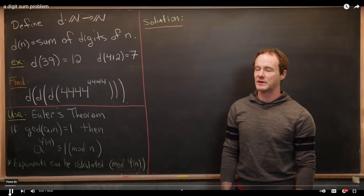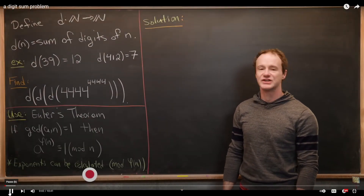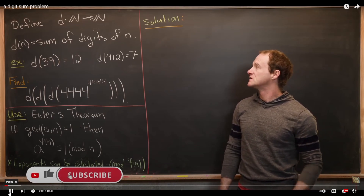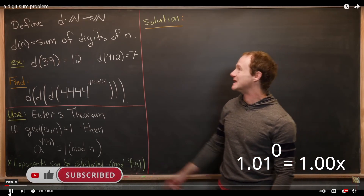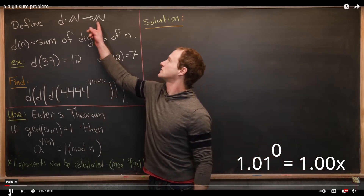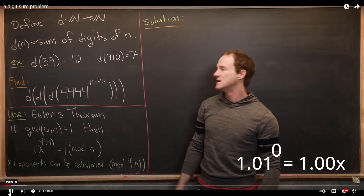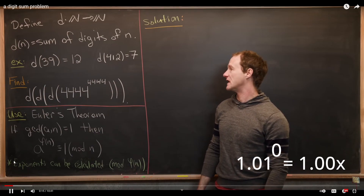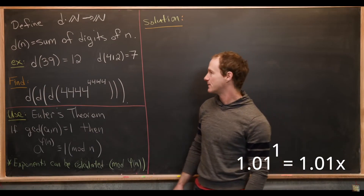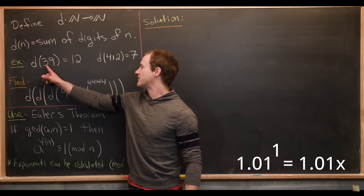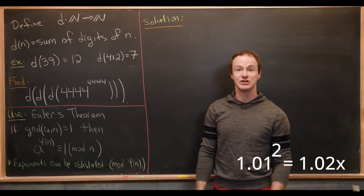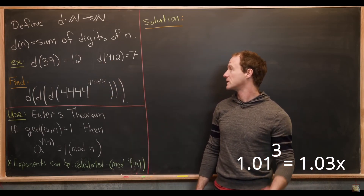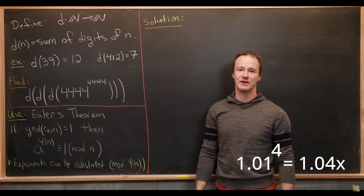Here we're going to look at a nice problem involving the digit sum. Let's recall what the digit sum is. We define a function d from the natural numbers to the natural numbers such that d of n is equal to the sum of the digits of n. For example, d of 39 is 3 plus 9, which is 12. d of 412 is 4 plus 1 plus 2, which is 7.